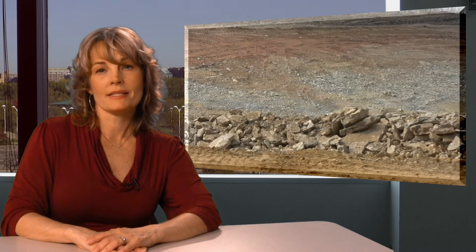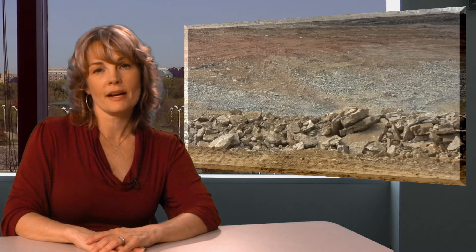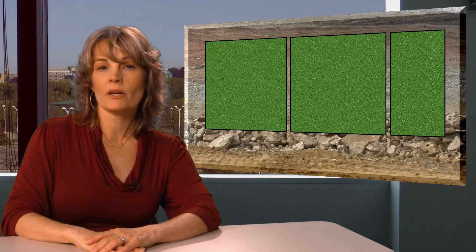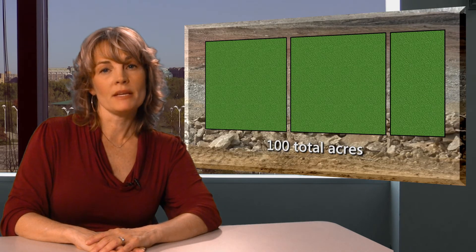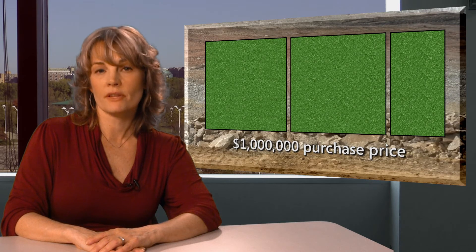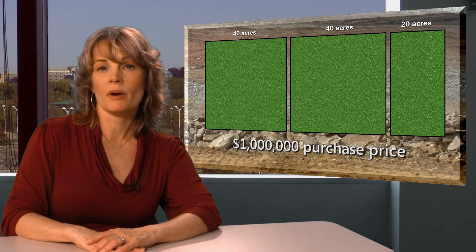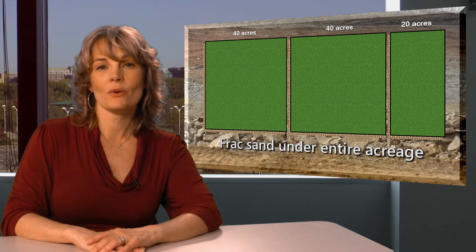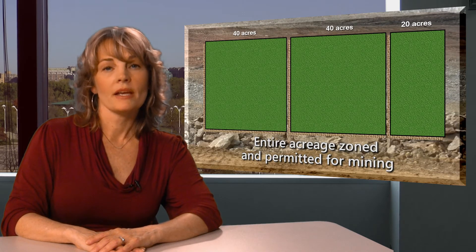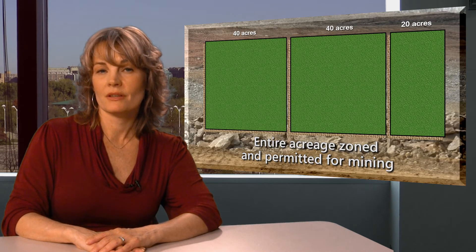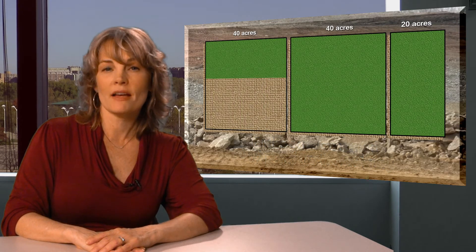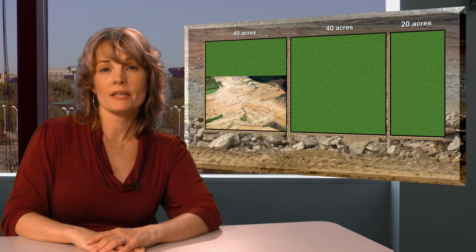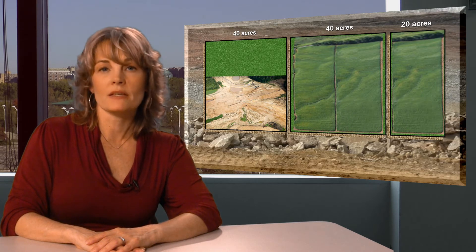Now let's look at an example of frac sand site assessment. On February 1, 2011, Company ABC purchased three parcels of agricultural land totaling 100 acres from Farmer Jones, paying one million dollars for two 40-acre parcels and one 20-acre parcel. Frac sand deposits extend throughout the entire 100 acres. Company ABC obtained a zoning change and a permit to mine frac sand from all 100 acres. The company removed the overburden and mined 25 acres of a 40-acre parcel in May of 2011. The other two parcels, totaling 60 acres, are leased back to the farmer to continue in agricultural use.